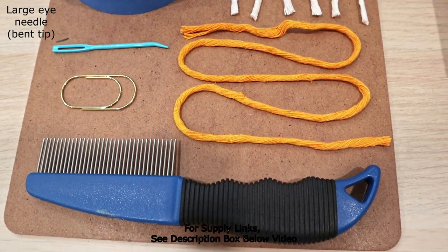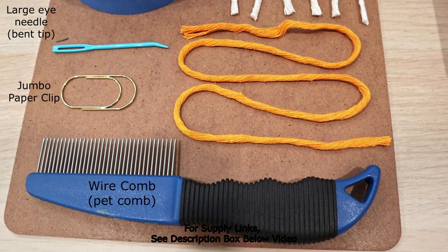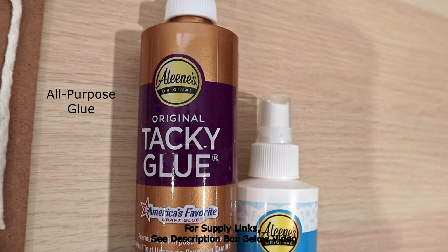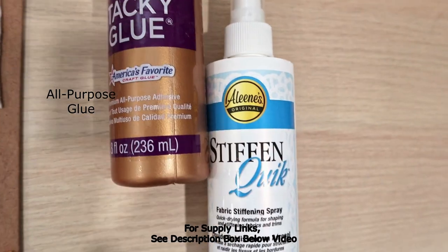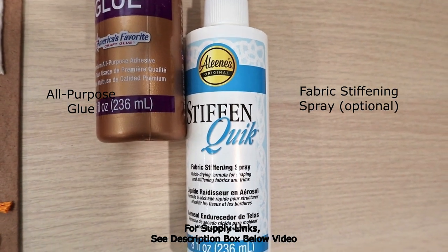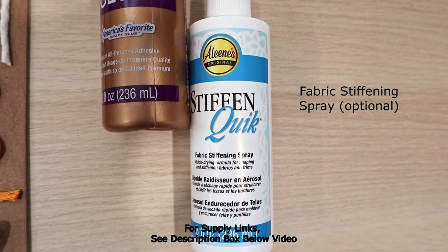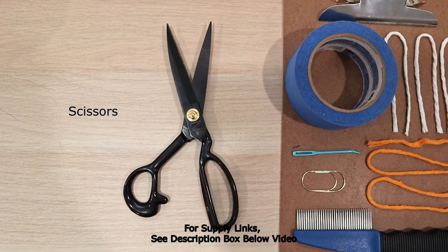You'll also need a large eye needle. I used a bent tip needle as well as a jumbo paper clip and a wire comb or a pet comb. You'll also need some all-purpose glue and optionally you can get this fabric stiffening spray. I'll show you how to use it at the end. And of course a pair of scissors.